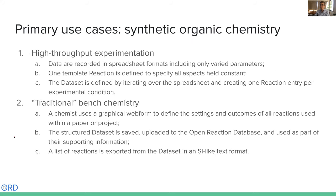There are two primary use cases we're initially targeting, informed by the survey we sent out last year. The first is high-throughput experimentation. High-throughput experiments obviously generate a lot of information and tend to contain many positive but also many negative outcomes.